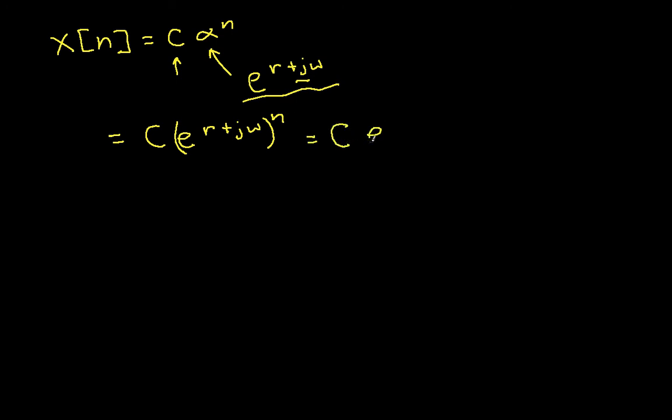And we can rewrite this as c e to the rn times e to the j omega n. So what I'm doing here is I'm using the fact that when I raise something to the nth power, it's the same as multiplying the exponents. And I'm also saying that if I have a sum of two exponents, I can break it up into two sums. And just because we need something to call it, I'm going to call the e to the r part beta. So I can write this then as c beta to the n e to the j omega n. And why do I want to do that? Well, let's start with this e to the j omega n thing.